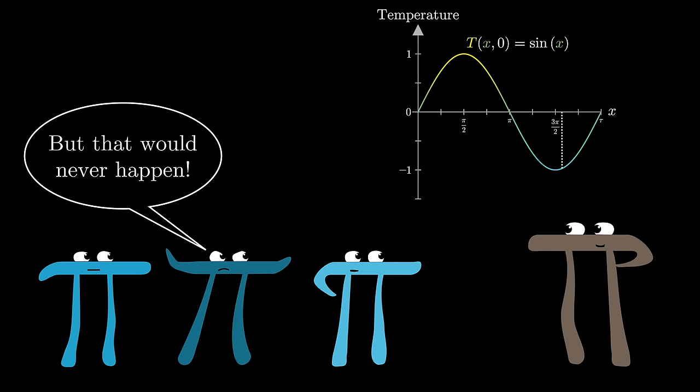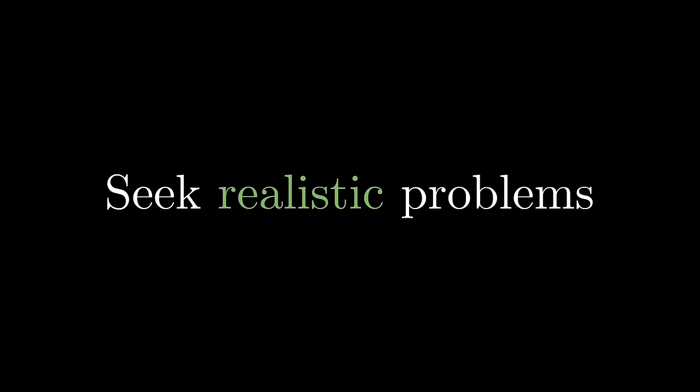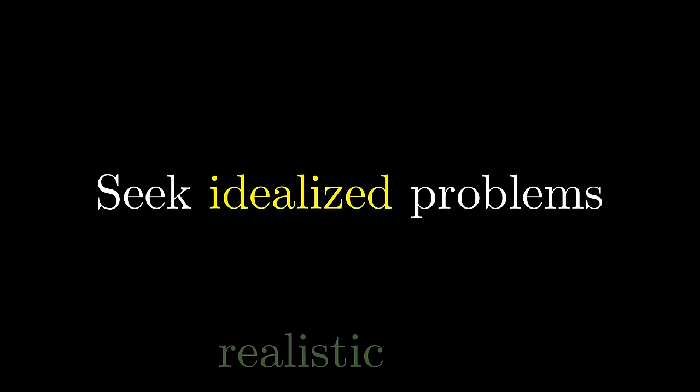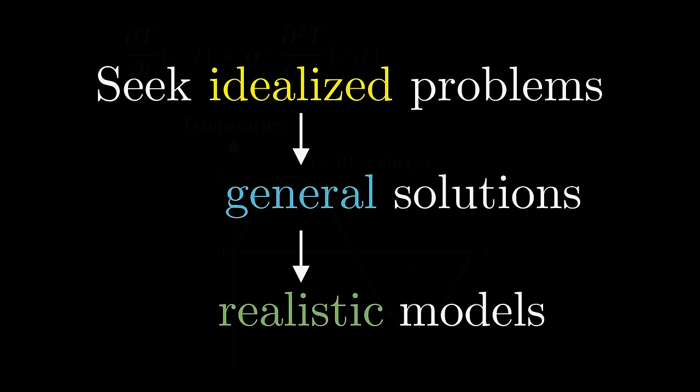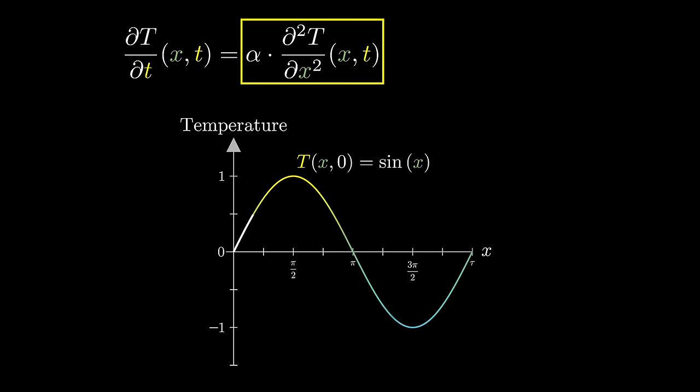Yes, the idea of a rod's temperature just happening to look like sine of x, varying around whatever temperature our conventions arbitrarily label as zero, is clearly absurd. But in math, you should always be happy to play with examples that are idealized, potentially well beyond the point of being realistic, because they can offer a good first step in the direction of something more general, and hence more realistic.